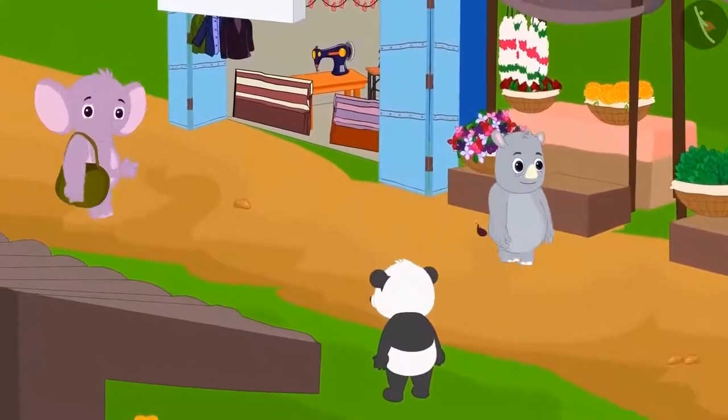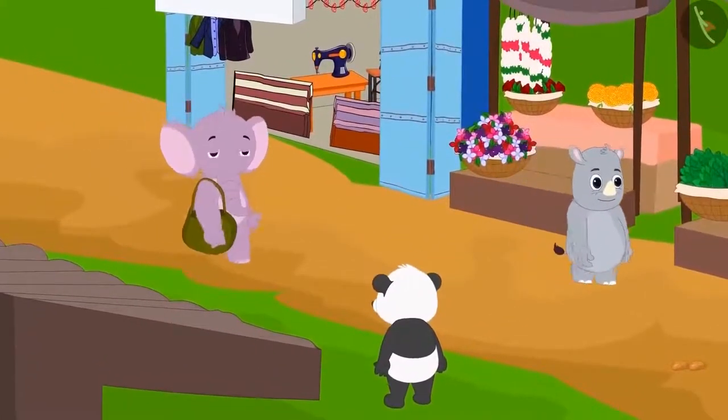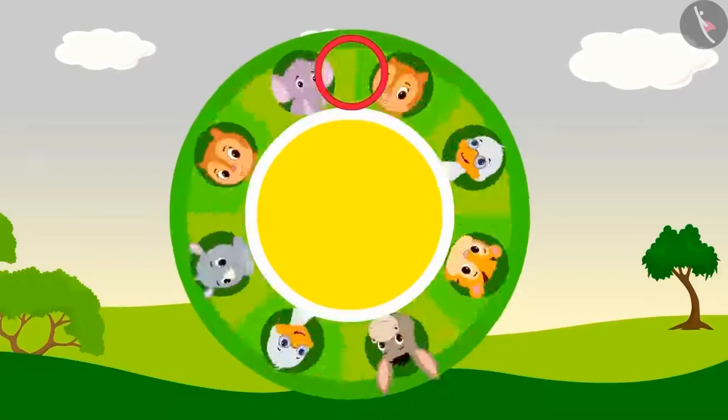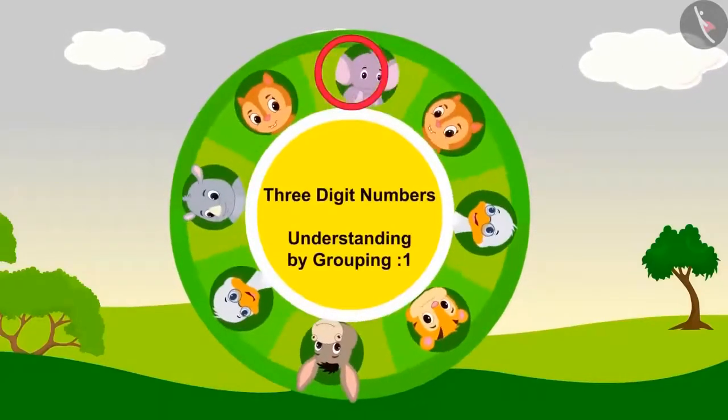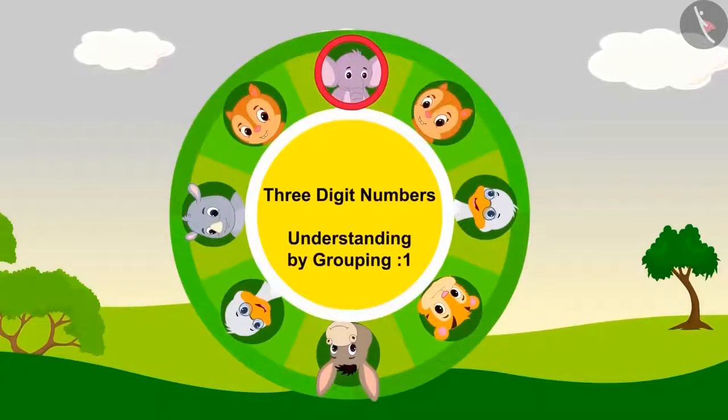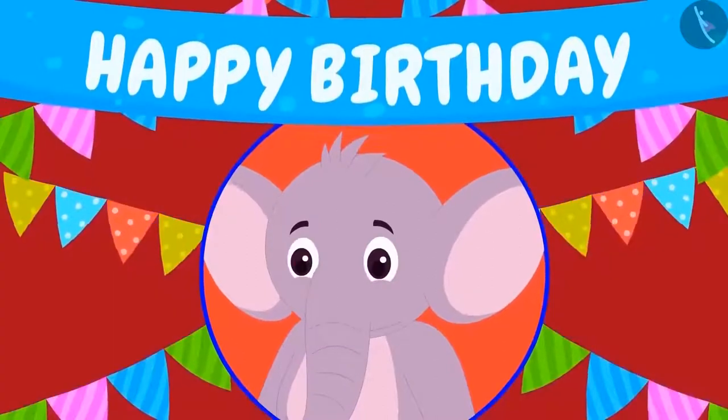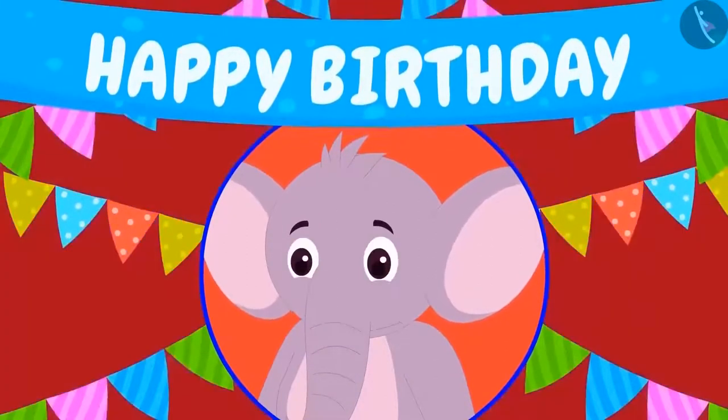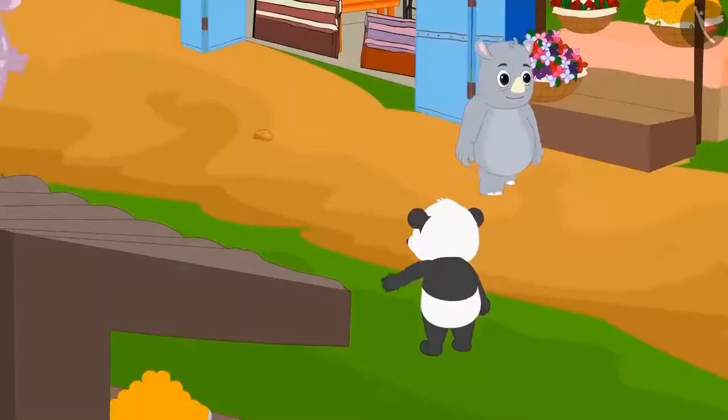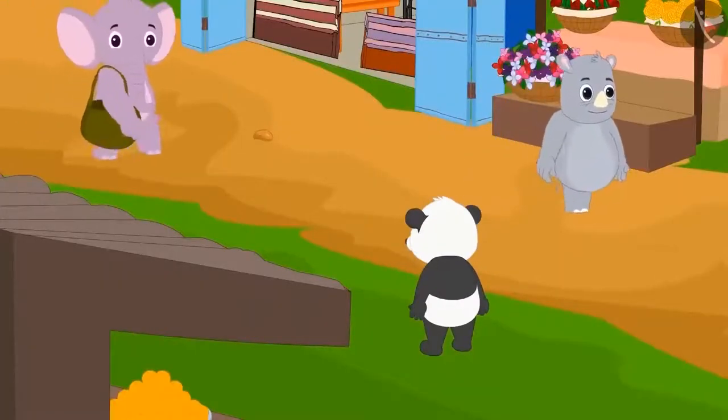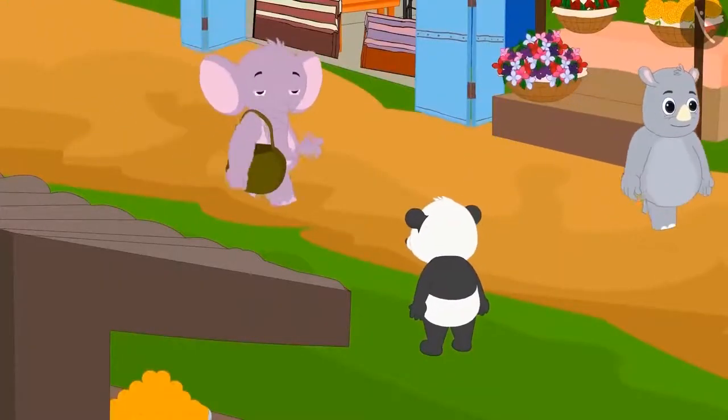Children, do you like going on a tour of the market? Let's go on a market tour with Appu and learn more about three-digit numbers by grouping them. On the occasion of Appu's birthday, he has invited everyone to the party. To prepare for the party, he has come to buy some items from the market. Let us also walk with him.